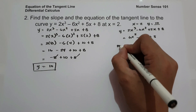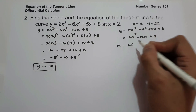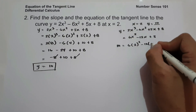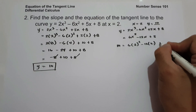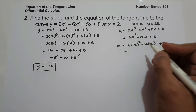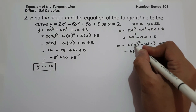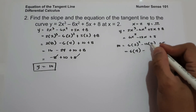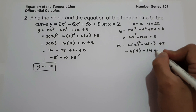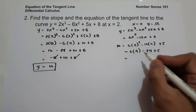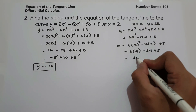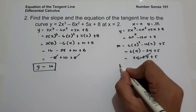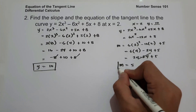To find the slope, substitute x = 2: 6 times 2 squared minus 12 times 2 plus 5. 6 times 4 is 24, minus 12 times 2 which is 24, plus 5. 24 minus 24 cancels, so the slope is 5.